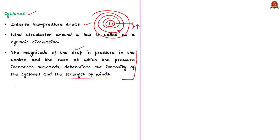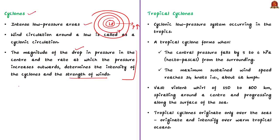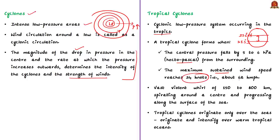As the name indicates, a tropical cyclone is a cyclonic low pressure system occurring in the tropics, which lies between 23.5 degrees north latitude (Tropic of Cancer) and 23.5 degrees south latitude (Tropic of Capricorn). A tropical cyclone forms when the central pressure falls by 5 to 6 hectopascals from its surroundings and the maximum sustained wind speed reaches about 34 knots, that is about 62 kilometers per hour.